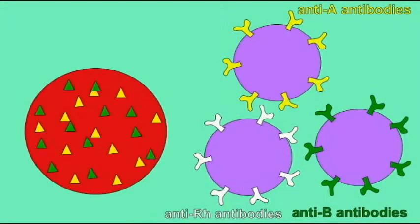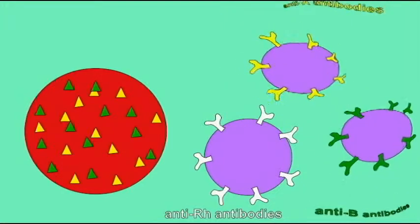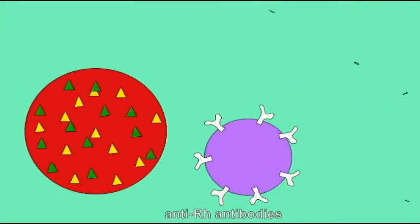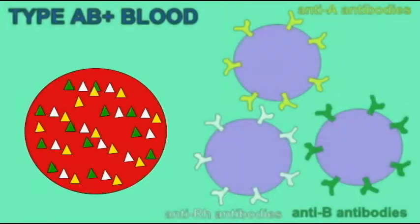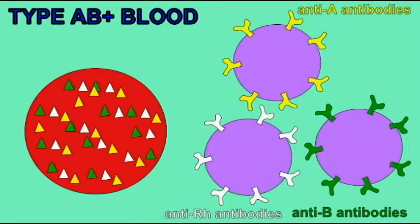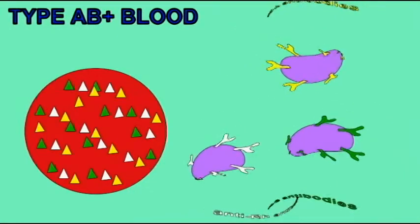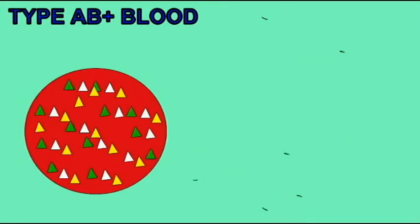Individuals with blood type AB negative have both A and B antigens on their red blood cells. Neither of these can be produced since they can react against self. However, they can make anti-RH antibodies from white blood cells. AB positive individuals have A, B, and RH antigens on their red blood cells, and cannot make antibodies against any of these since these would react against self.